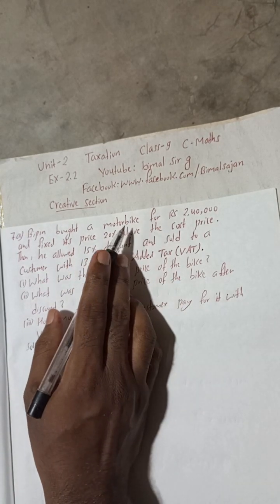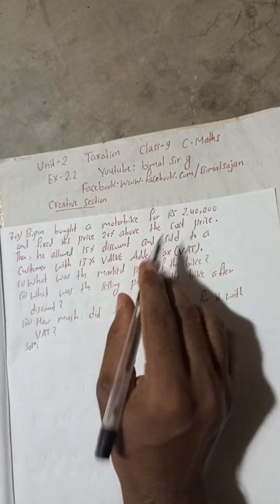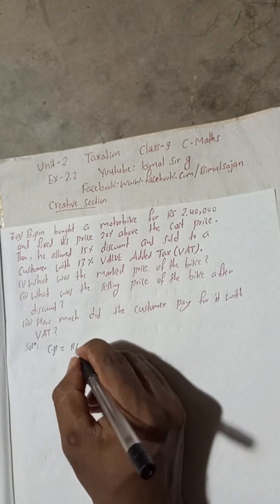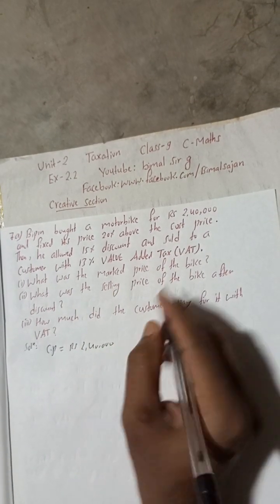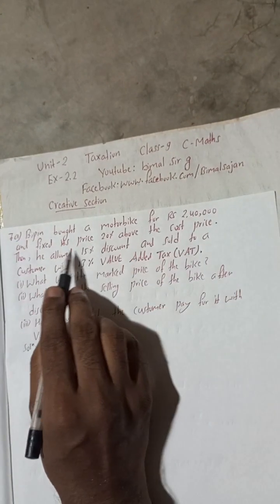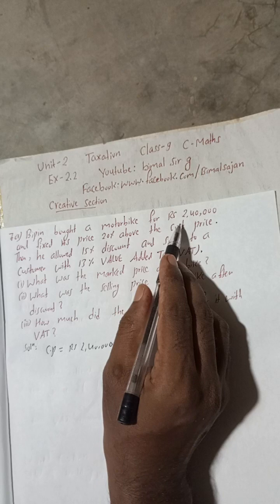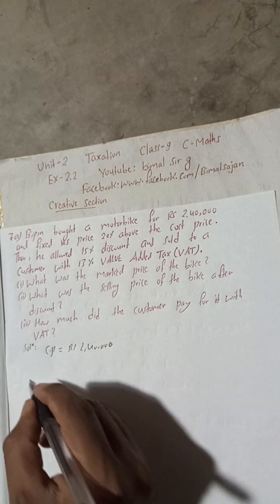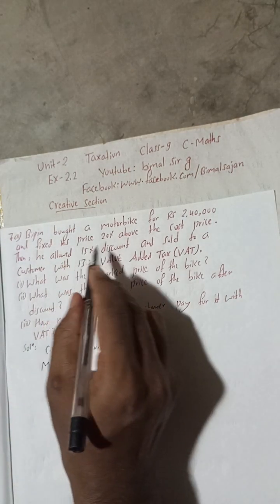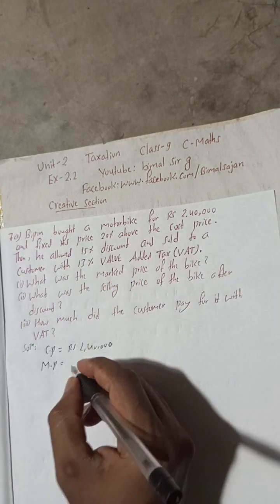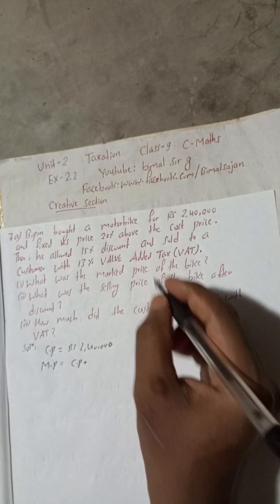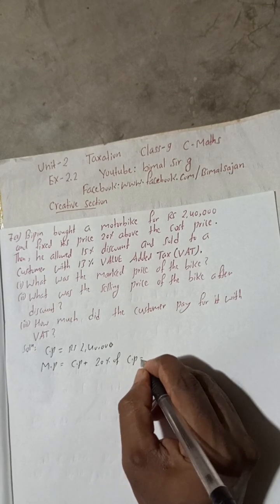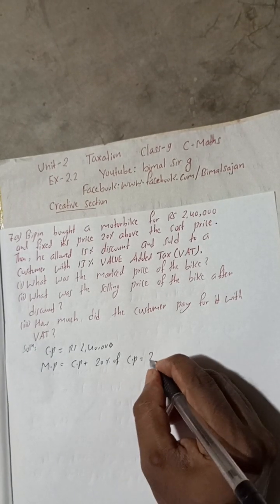Bpin bought a motorbike, so this is the cost price. CP equals Rs 2,40,000. He fixed its price 20 percent above the cost price. Whenever any price is fixed, that is the marked price. So MP equals CP plus 20 percent of CP.